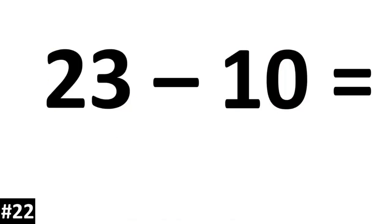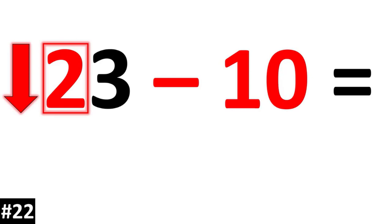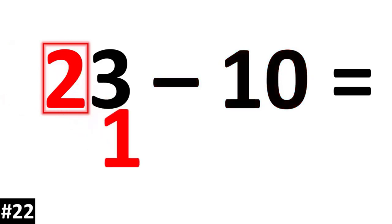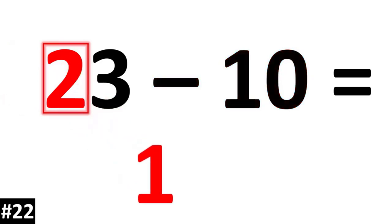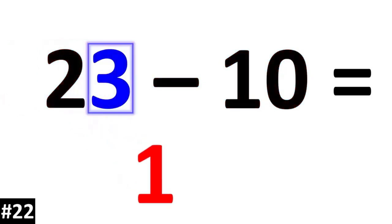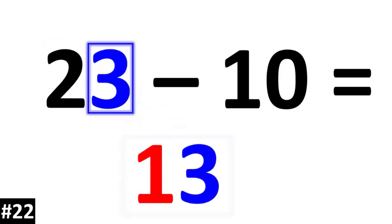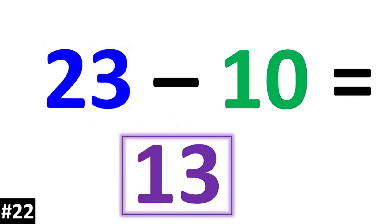23 minus 10. The tens value of 2 is going to go down to 1. The ones value stays the same, so we have 13.